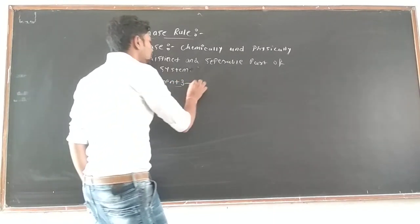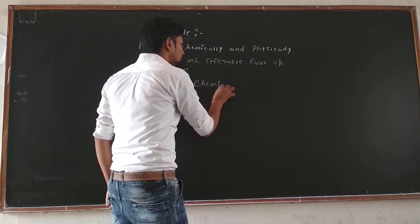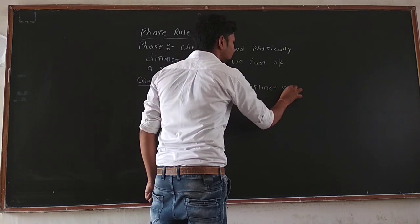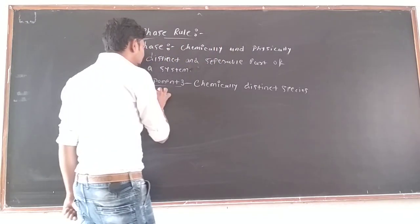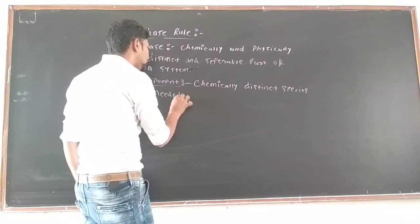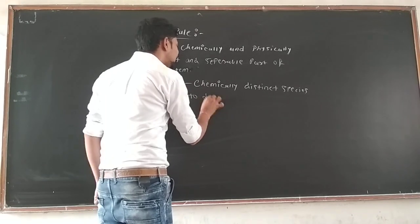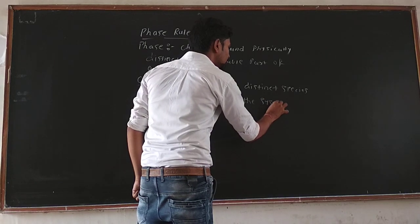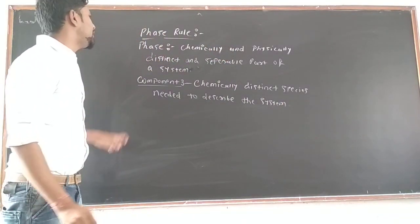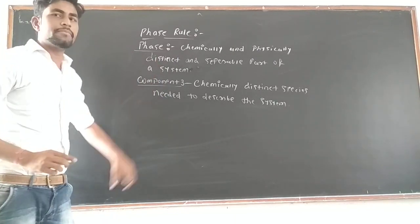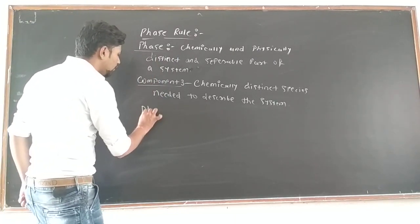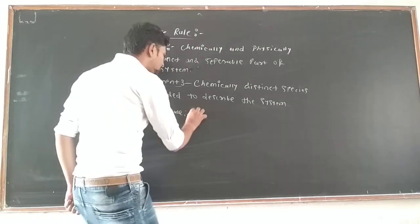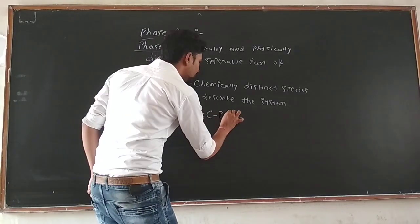The component may be defined as the chemically distinct species needed to describe the system. Phase rule totally depends on the number of phases and the number of components. The expression for phase rule is: F = C - P + 2.